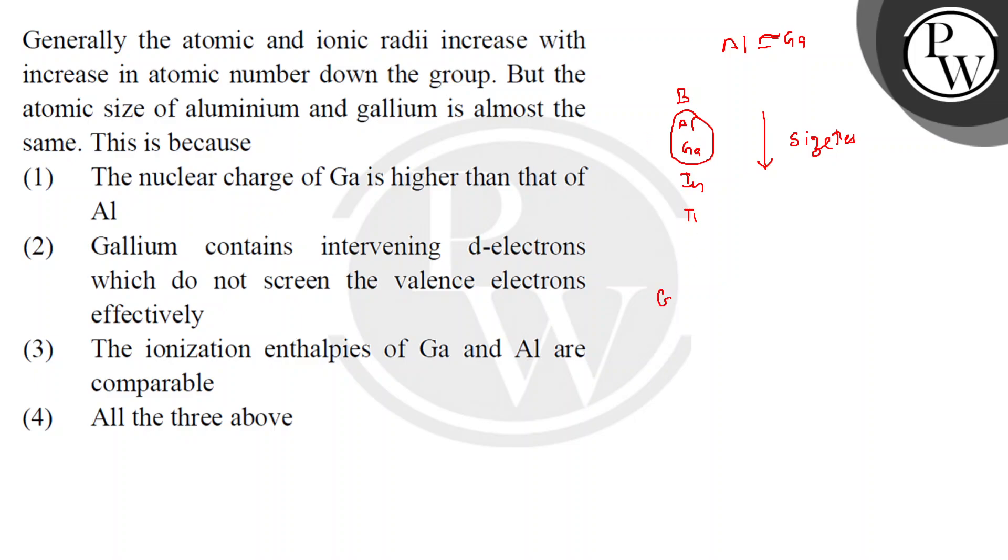But it happens that in Gallium, there are D electrons. In Gallium there are D electrons. How many? 31. Aluminium is in P block, P electrons.